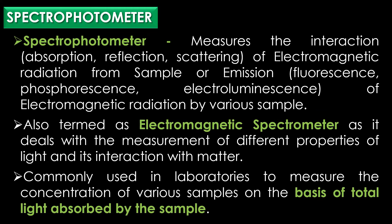The spectrophotometer is a particular type of spectrometer that measures interactions like absorption, reflection, or scattering of electromagnetic radiation from a sample, or emission such as fluorescence, phosphorescence, or electroluminescence by various samples. It is also termed an electromagnetic spectrometer as it deals with the measurement of different properties of light and its interaction with matter.